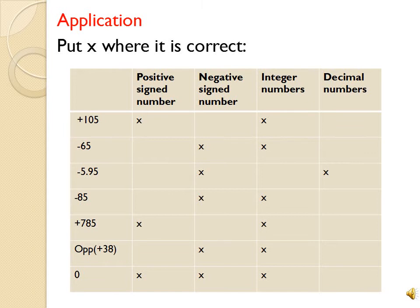So let's see if we understand these terms or not. Here we will put an X where correct in the table. The table has: positive signed number, negative signed number, integer numbers, and decimal numbers. Let's take the first number: plus 105. Plus يعني هو positive signed number, أكيد مش negative لأنه عنده إشارة plus. And since it doesn't have a decimal point, it is an integer number.